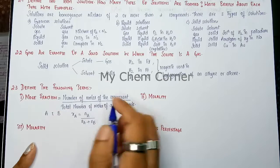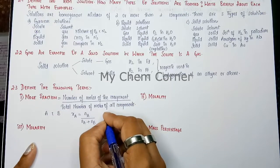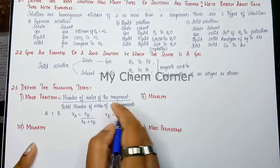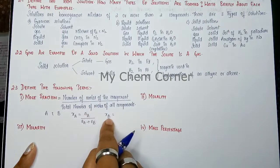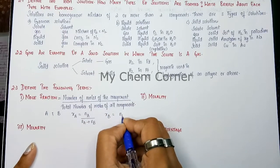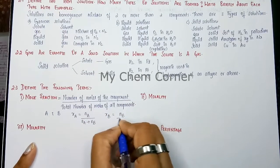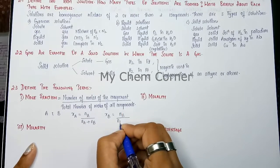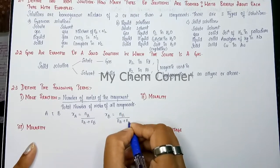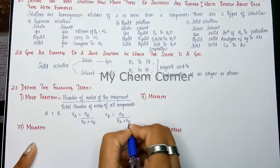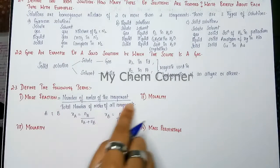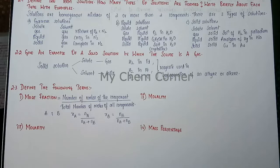Similarly, the mole fraction of B is written as xB, equal to the number of moles of component B (nB) divided by the total number of moles of all components, which is nA plus nB. So this is the formula and definition for mole fraction.